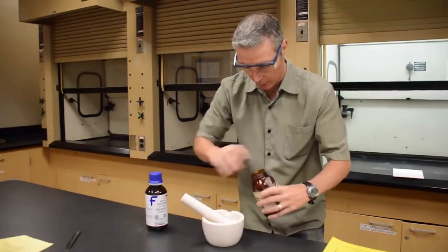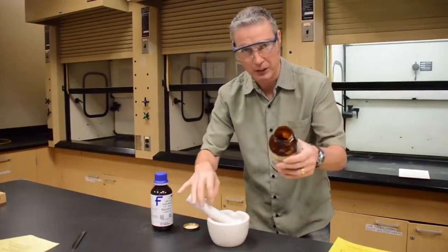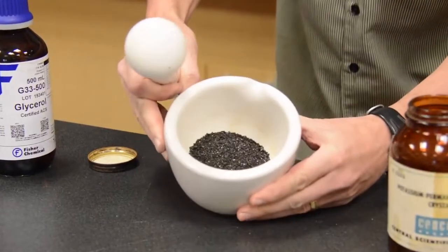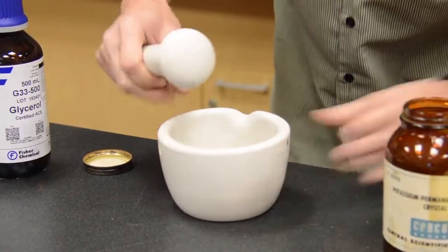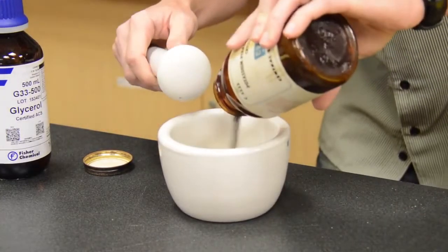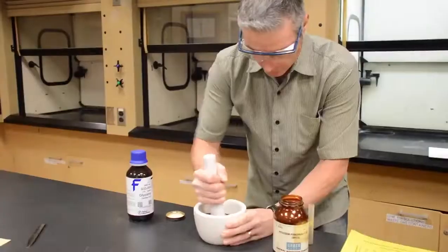First, I've got to grind this stuff up because it's very coarse, it's kind of purple, and it's very pretty. It's kind of the color of grape juice. And I'm going to grind it.